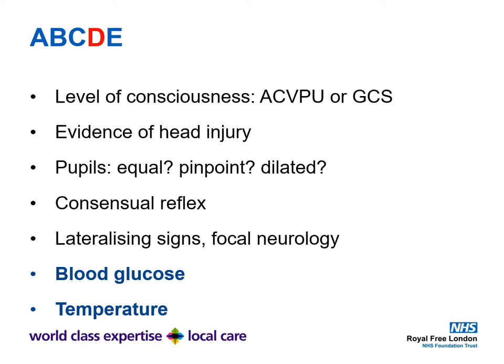Two critical investigations that must be done are a blood glucose and a temperature. Environmental causes of reduced level of consciousness are relatively rare but not unheard of, particularly if you work in A&E and your patient has come in after a night out or is of no fixed abode. Blood glucose is critical in any unwell patient — the last thing you'd want is to miss a hypoglycaemia or mistake it for alcohol toxicity, as the patient could die or get irreversible metabolic brain injury.